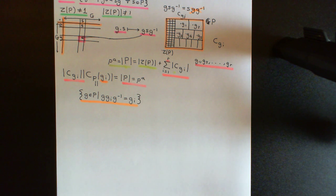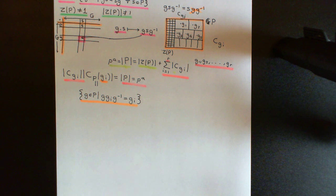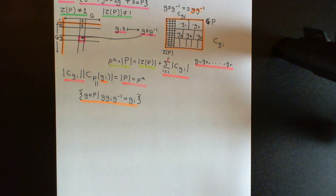Welcome back to this next video in which we are discussing p-groups. We've started off with Theorem 1, which is that the centre of a p-group is never equal to the trivial subgroup, i.e. there is always a non-identity element in a p-group which will commute with all other elements of that group.